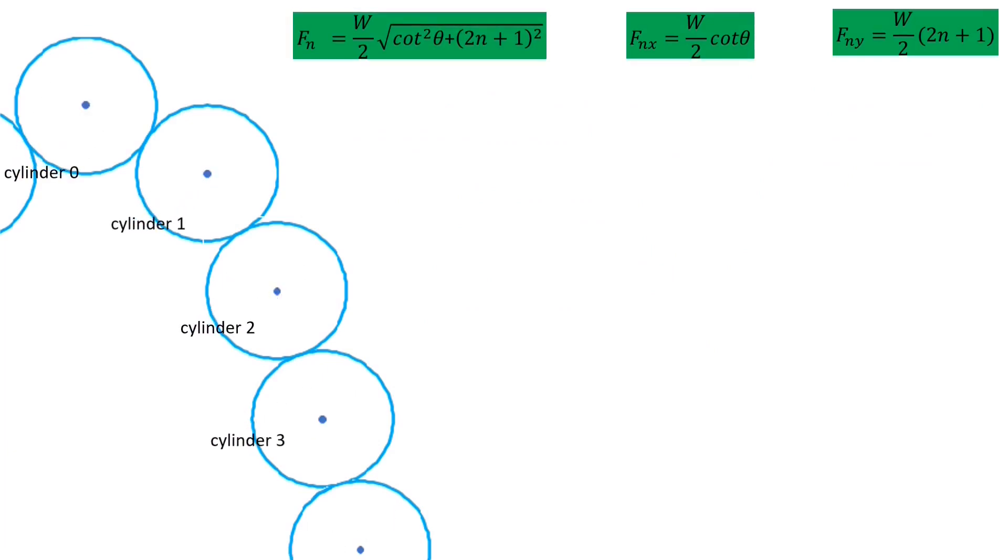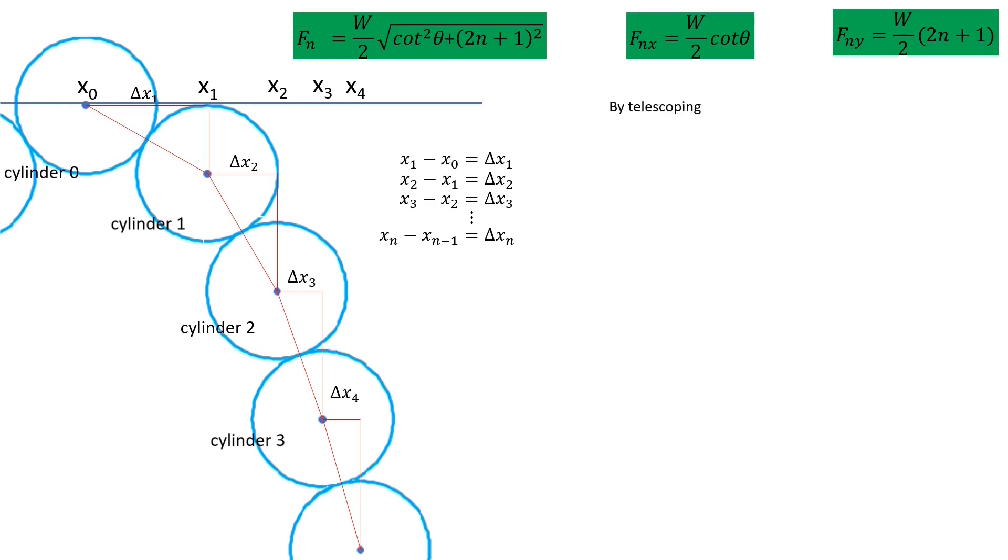Let x0 be the horizontal coordinate of the center of cylinder 0. We let x1 be the horizontal coordinate of the center of cylinder 1, and so on. And let the delta x's be defined this way, as backward differencing. By the telescoping property, sums of differences cancel in pairs. So we are left with xn minus x0 equals the sum over all the lower delta x's up to that point. And because x0 is at the origin, x0 equals 0, and this simplifies. A similar argument holds for the vertical quantities.